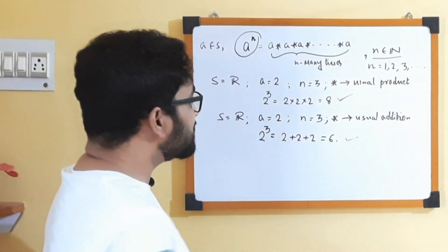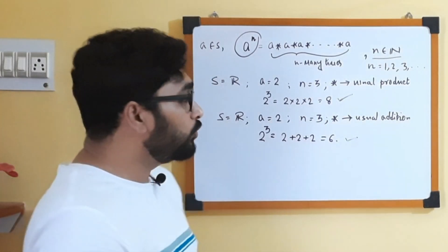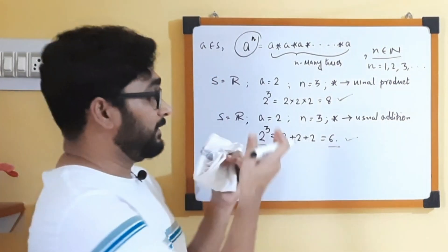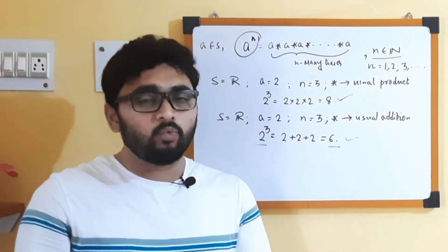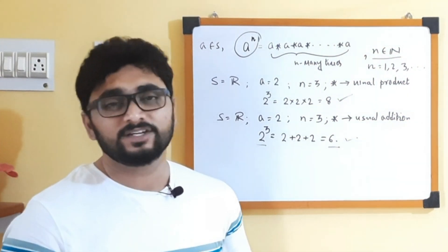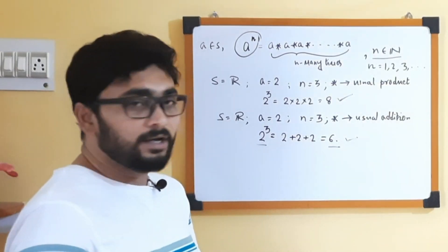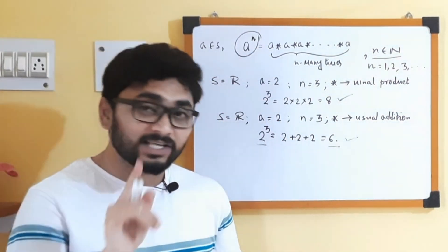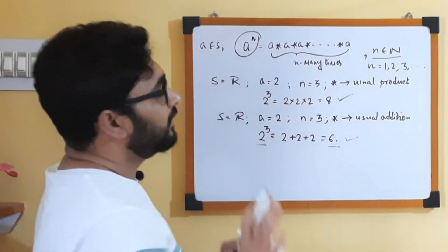Remember, n is a natural number, meaning n cannot be 0 or negative. So for a positive integer n, this is defined and meaningful. Whenever we study this kind of symbol, we need to understand what is our operation. This operation is called a binary operation — you can search in Google for the specific technical term. The whole thing — what will be the value of this expression — actually depends on what your operation is.